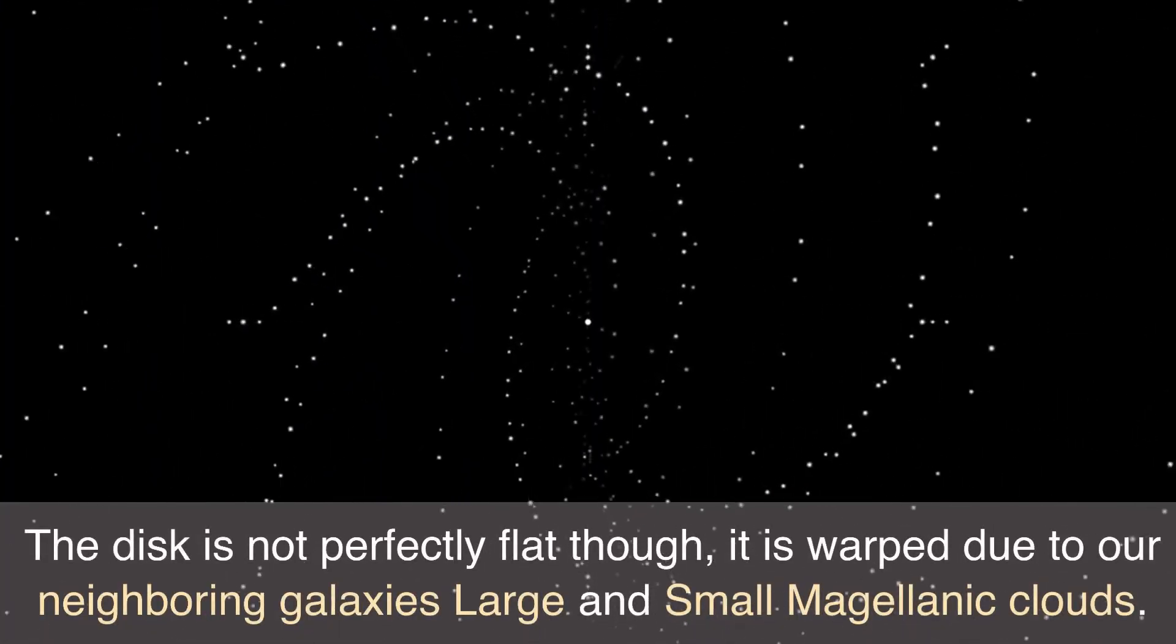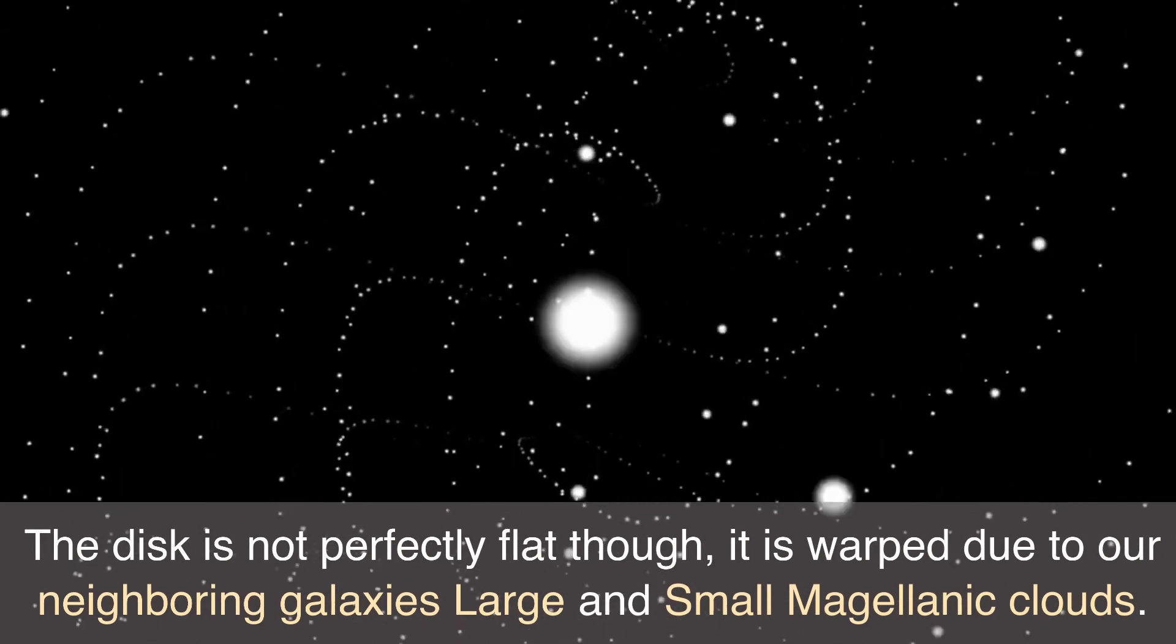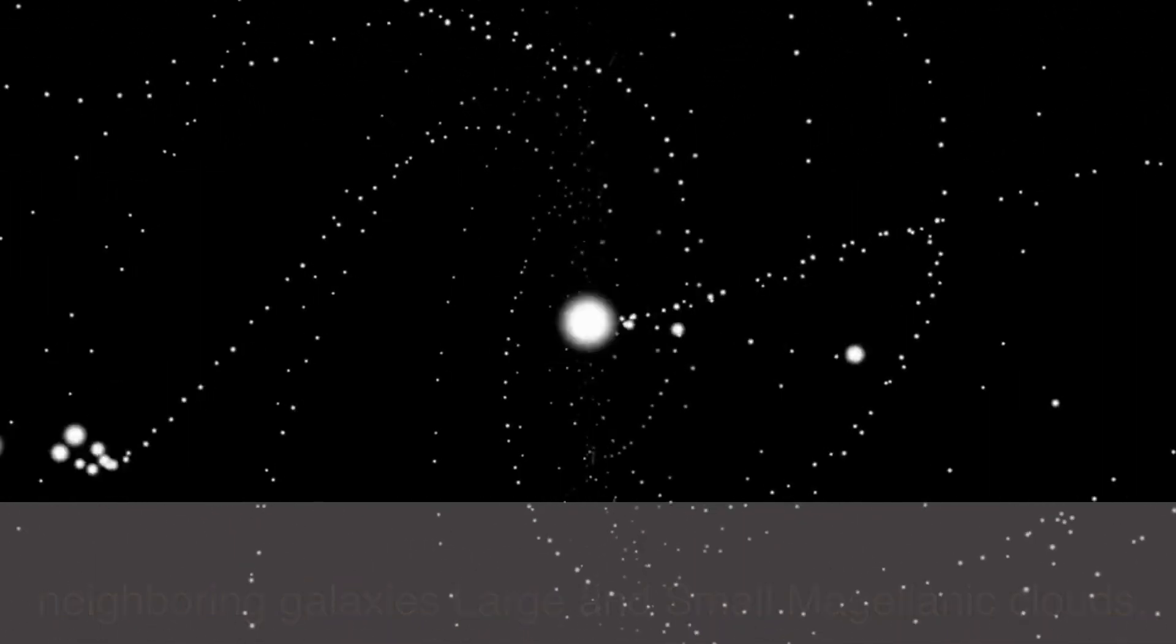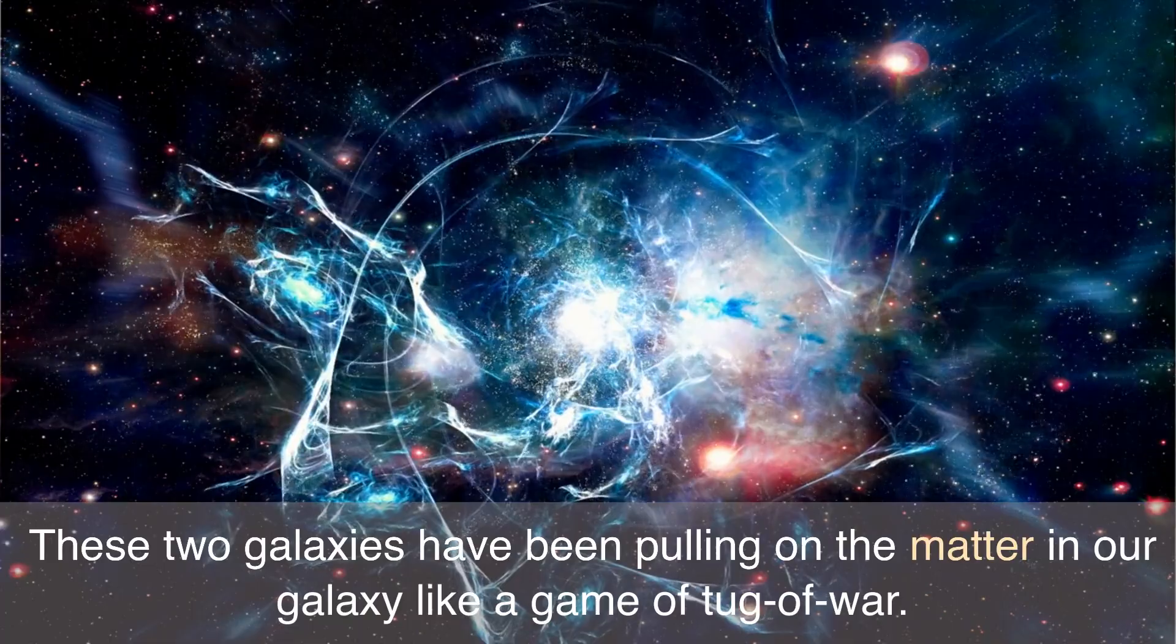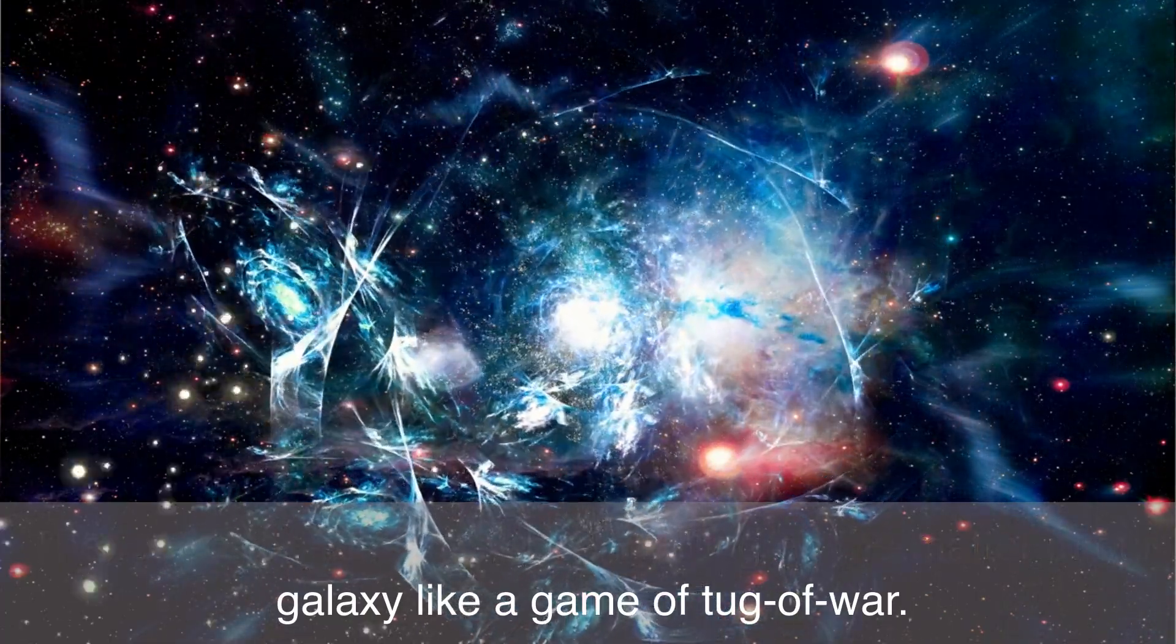The disk is not perfectly flat though. It is warped due to our neighboring galaxies, Large and Small Magellanic clouds. These two galaxies have been pulling on the matter in our galaxy like a game of tug-of-war.